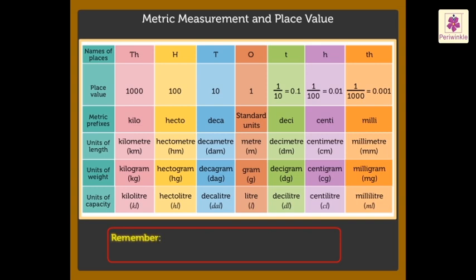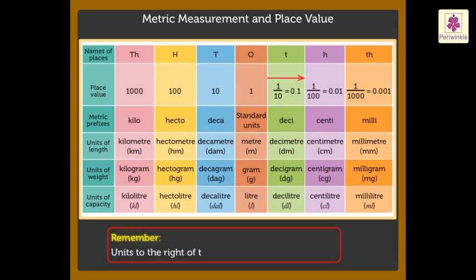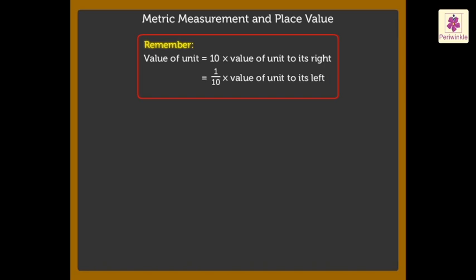Students, remember — we attach certain prefixes to standard units to obtain bigger or smaller units. The units appearing to the left of the standard units are bigger, and the units appearing to the right are smaller. The value of a unit is ten times the value of the unit to its right, and one-tenth the value of the unit to its left.